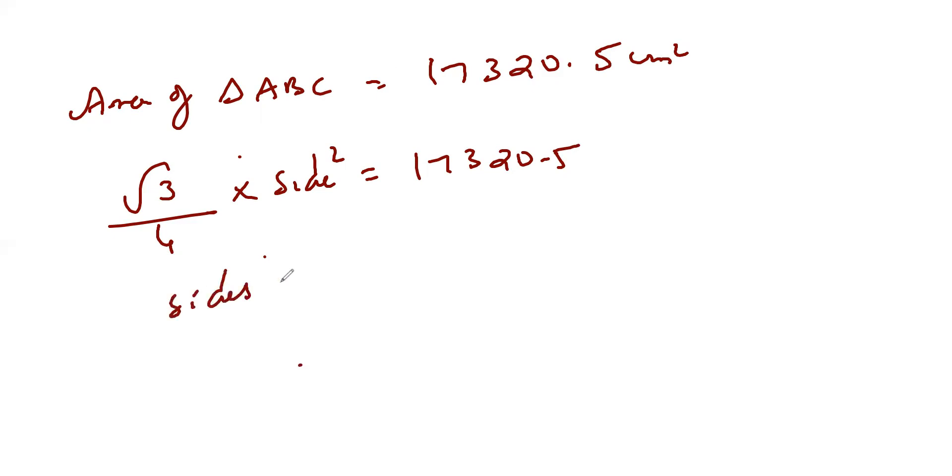So side square is what? 17320.5 into 4, because this 4 should be multiplied to this side, divide by 1.732. If I do that I'll get the side as 200 centimeter.